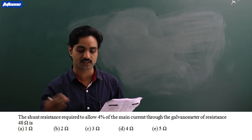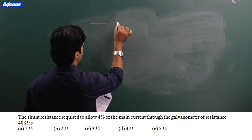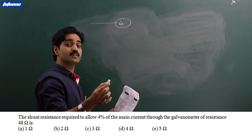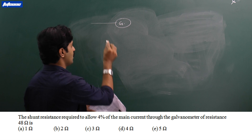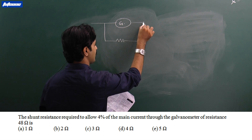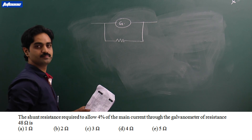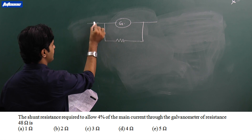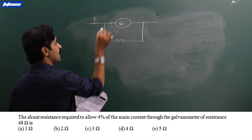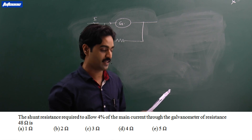For this circuit diagram, if this is the galvanometer, to convert it into a meter we have to connect a small resistance called a shunt in parallel to the galvanometer. If the main current is i, it is given that through this galvanometer only four percent of the main current is flowing.